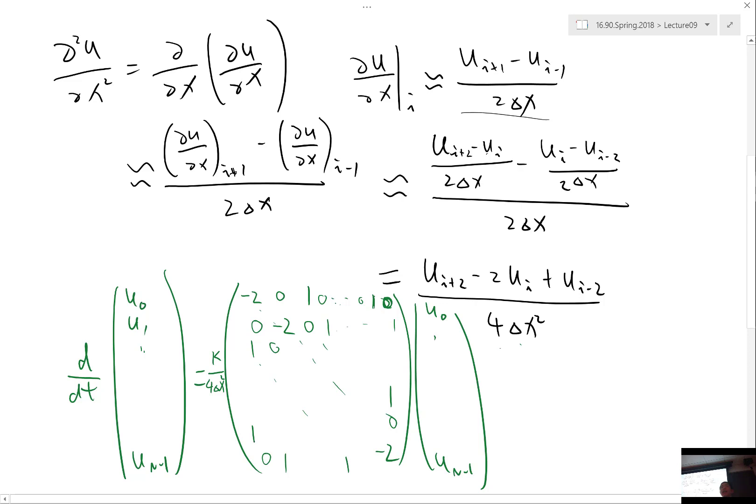Student: This one right? This one? Instructor: Yes it's the wrapped around term, yes. And again this one is also from this term when i is equal to one. And these two are from the i plus two term when i is very large close to the end.